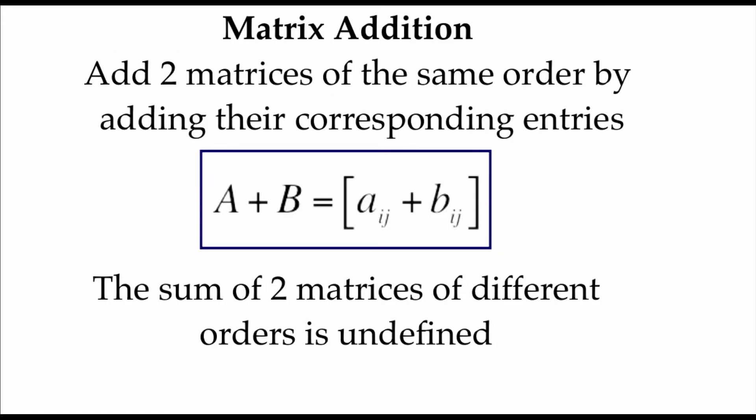Matrix addition and subtraction work out really nicely. In order to add two matrices of the same order together, all we're going to do is take their corresponding entries and add or subtract them together. Now it is important that our two matrices have the same exact order. If they don't have the same order then we are unable to add those two matrices together. So we would say that the sum is undefined.